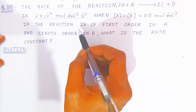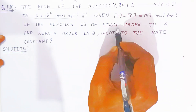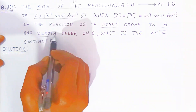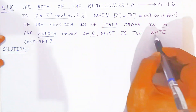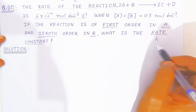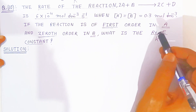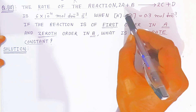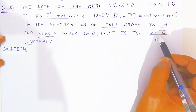If the reaction is first order in A and zeroth order in B, what is the rate constant? The rate constant we are going to show with K. To find K, you have to apply the rate law. When you apply the rate law to this reaction, only then you will find the rate constant.